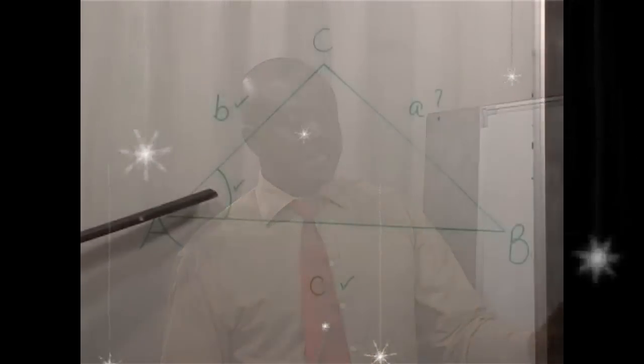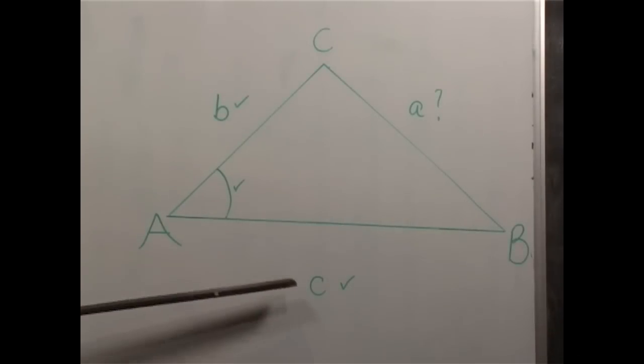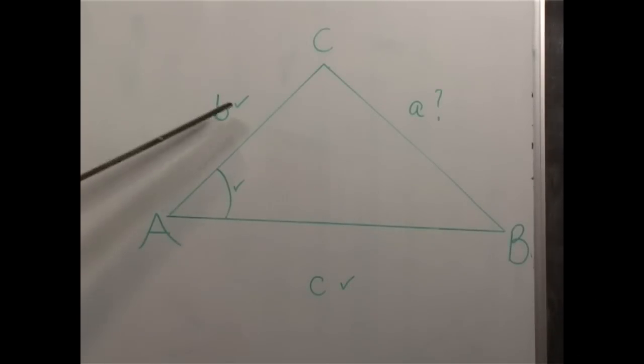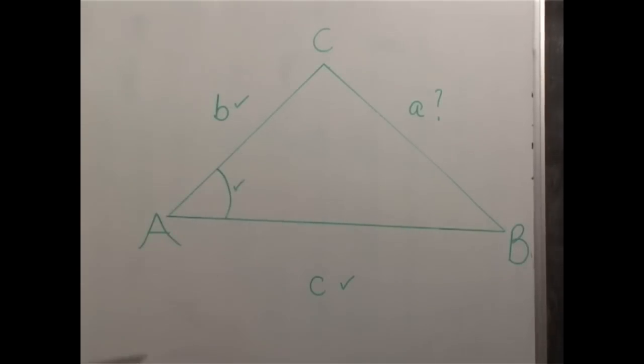We want to find the length of side A. Like was the case in the sine rule, we always have to introduce what we know, and this has to be a right-angled triangle. So we are going to draw a perpendicular line from C to the line AB so that the side which we want to find, A, is going to be the hypotenuse side of the resulting triangle.